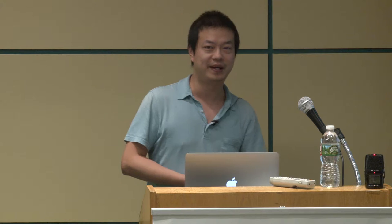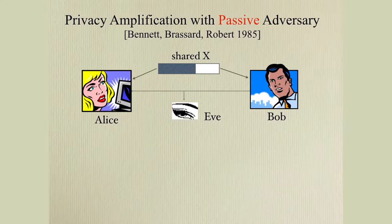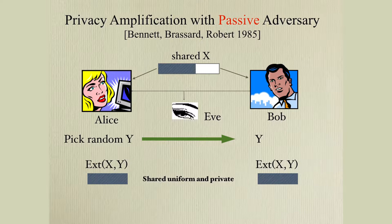In this talk, we assume the adversary has unlimited computational power, so this is a purely information-theoretic setting. A very useful tool, as seen in the previous talk, is the seeded extractor, where you use a seed to extract from a weak random source and output a uniform distribution. Given that, the problem of privacy amplification when the adversary is passive is actually quite easy to solve. Alice picks a random seed, sends it to Bob, and they both output the output of the extractor. Because the extractor output is uniform even if the adversary sees the seed, it remains private. This is a nice application of seeded extractors.